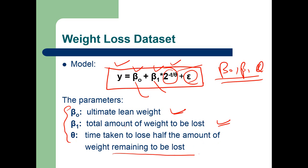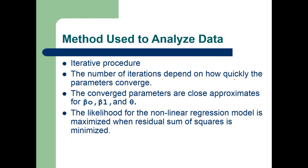All we need to do is use the data to find out these three parameters: beta 0, beta 1, and theta. The method used to iteratively find them is to take the data and determine the values of these three parameters. An iterative procedure is very often used, and the number of iterations depends on how quickly the parameters converge.